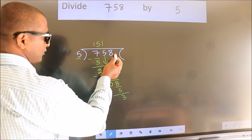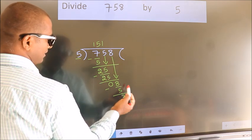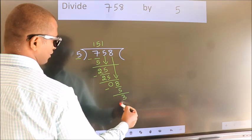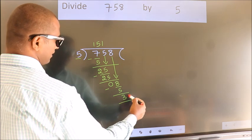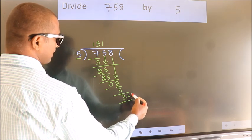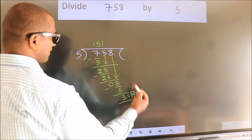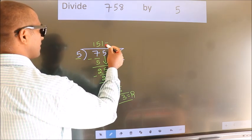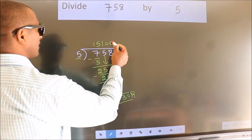No more numbers to bring down, so we stop here. This is our remainder. This is our quotient.